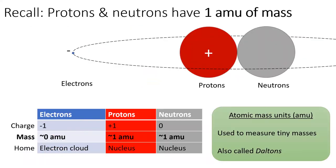Recall from the last lesson that protons and neutrons provide mass to an atom. They each weigh one amu.